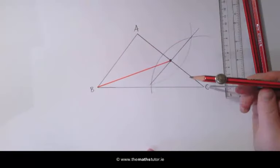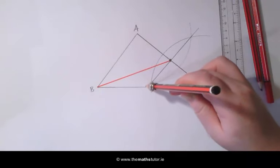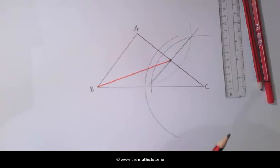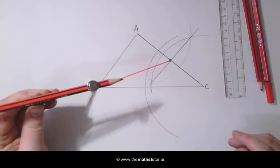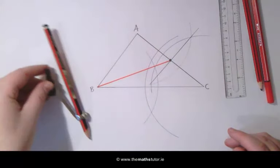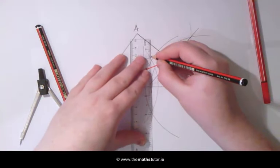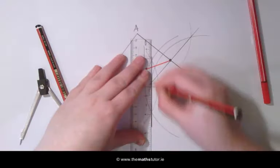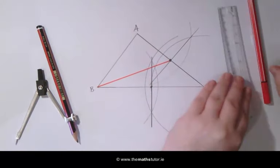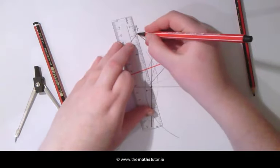So placing our compass on C and ensuring again that it is greater than half the width, we are going to draw an arc across the line. Placing it on B and without changing the width, we are going to draw another arc. Mark where these two intersect and then mark in our midpoint. We are then going to join this midpoint to the opposite vertex.